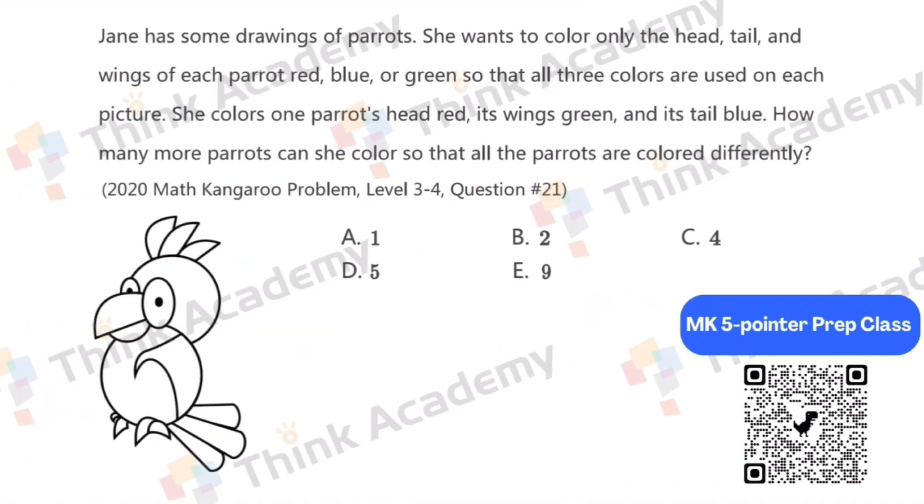Jane has some drawings of parrots. She wants to color only the head, tail, and wings of each parrot red, blue, or green so that all three colors are used on each picture.